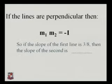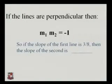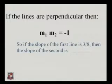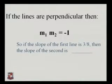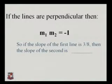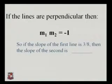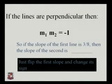If the lines are perpendicular and M1 times M2 equals minus 1, and the slope of the first line is 3/8, then M2 equals minus 1 upon M1. Taking the opposite sign gives minus, and taking the reciprocal gives 8/3. So the slope of the second line is minus 8/3.